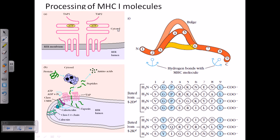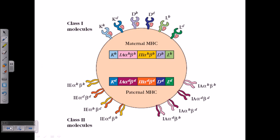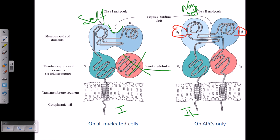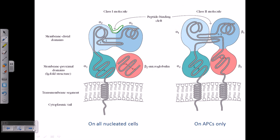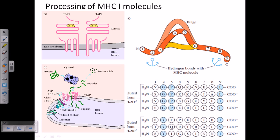Now let us talk about the processing of peptides by MHC molecules. Looking at the peptide binding cleft of an MHC molecule, a peptide must have a particular length for this attachment to have perfect affinity. It has been observed that a peptide length of 7 to 9 amino acids is the best fit for attachment with MHC Class 1 molecules.